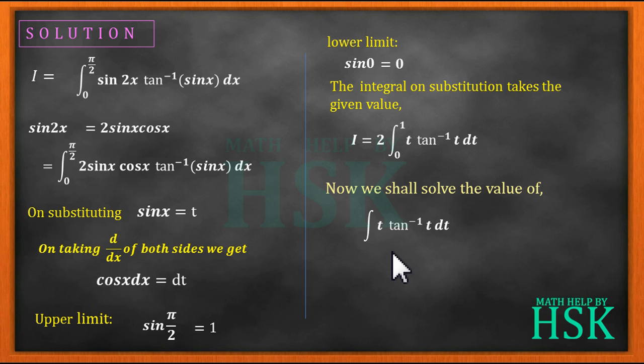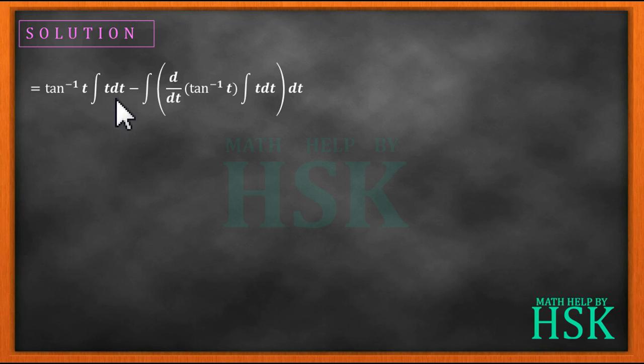This shall be solved by using integration by parts. We have taken tan inverse of t as first function, and t as the second function. On applying the formula of integration by parts we obtain tan inverse of t into integration of t dt minus integration of the product of d by dt of tan inverse of t and integration of t dt, with respect to t. Now integration of t dt is equal to t square upon 2, and d by dt of tan inverse of t is 1 upon 1 plus t square.